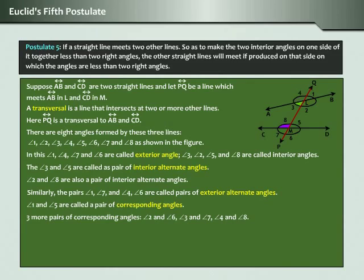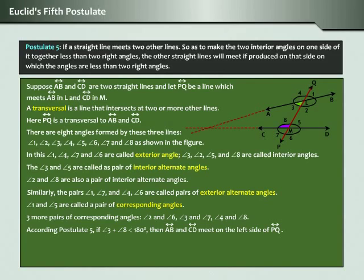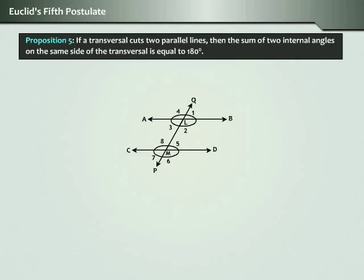Angle three and angle eight are interior angles on the same side of the line PQ. According to Postulate 5, if angle three plus angle eight is less than 180 degrees, then line AB and CD meet on the left side of PQ. Let us explore more on the condition where angle three plus angle eight is not equal to 180 degrees. For this we have the following: Proposition 5.